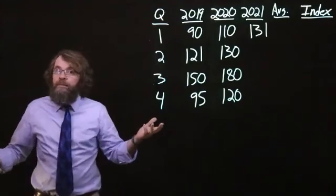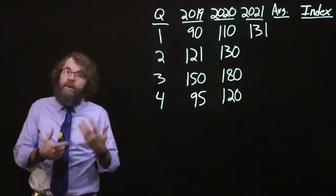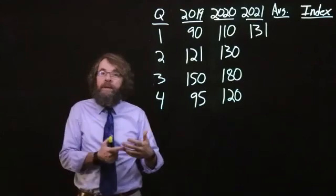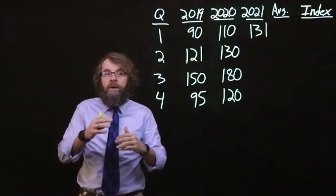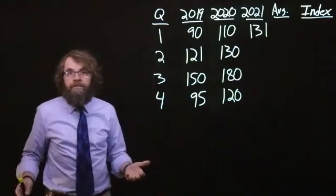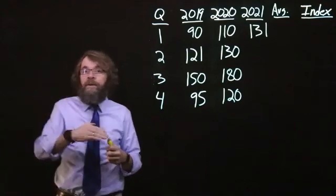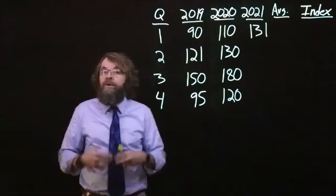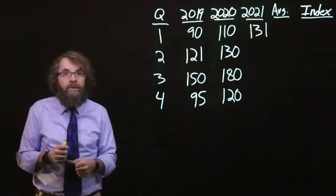And because we're using multiplicative indexes, what we're trying to figure out is how much a particular period is above or below what we would have otherwise predicted. So how much greater or lesser it is percentage-wise. So to do that, we need to do two things.